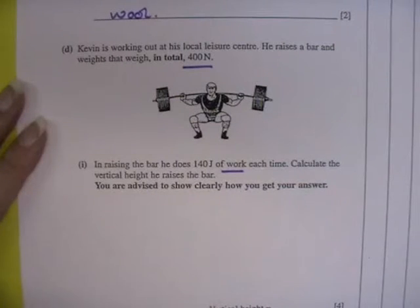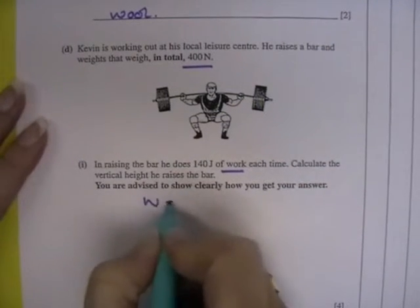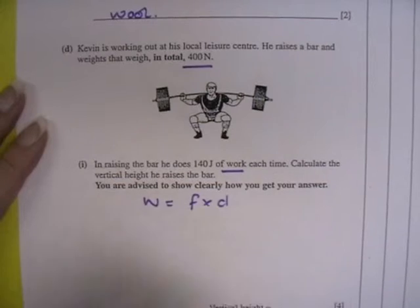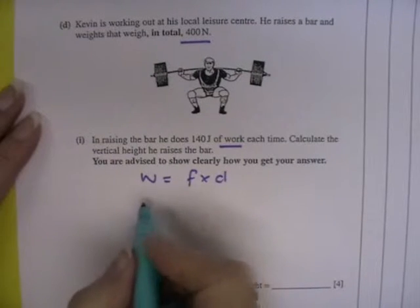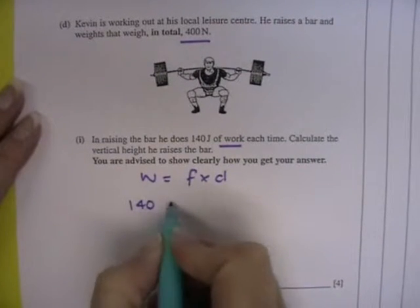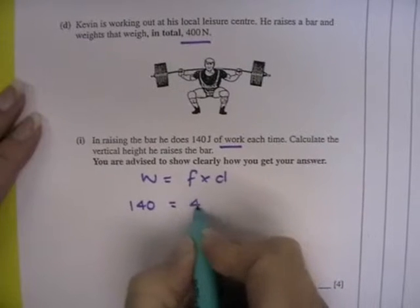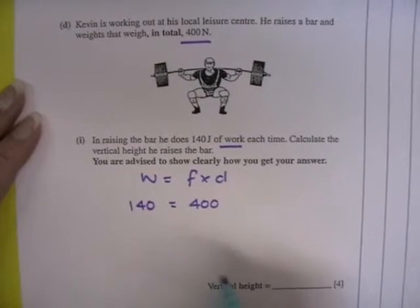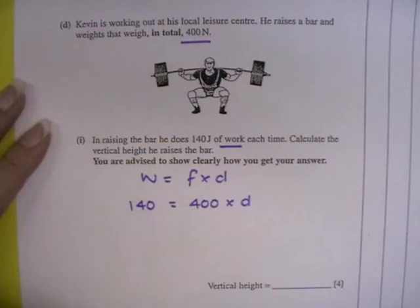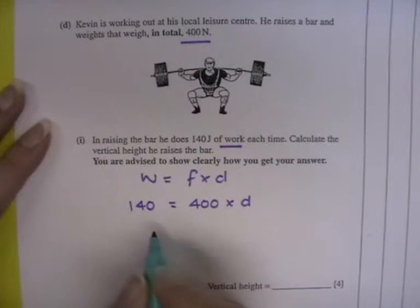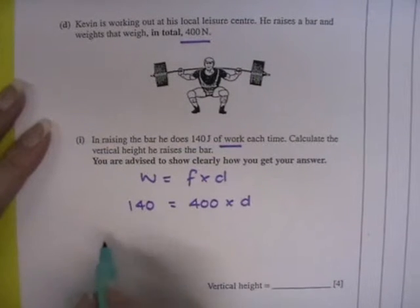First of all, we must always write down the equation that we use. So work is force times distance. And this starts to jog our memory and lead us into the question. So the work he does is 140 joules, the force he is lifting is 400 newtons, and we want to find the distance that he lifts it. So 140 joules equals 400 times d.